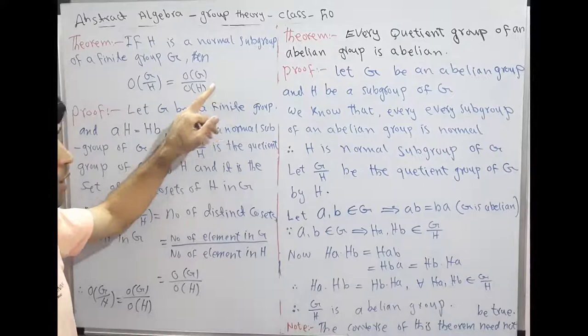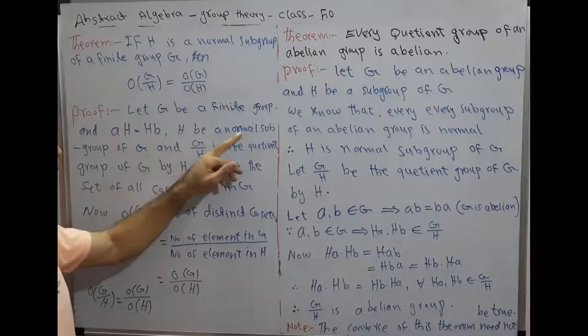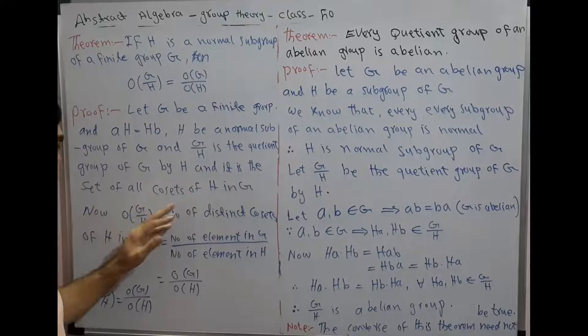Proof: Let G be a finite group and H be a normal subgroup of G. Then G by H is the quotient group of G by H, and it is the set of all cosets. It is the definition of the quotient group — cosets of H in G.